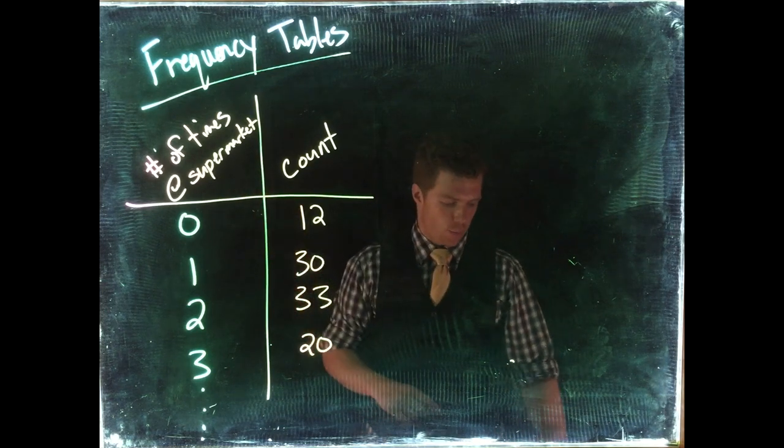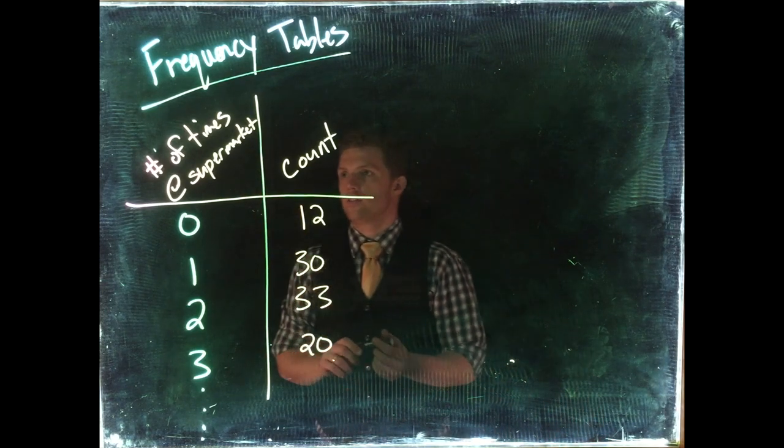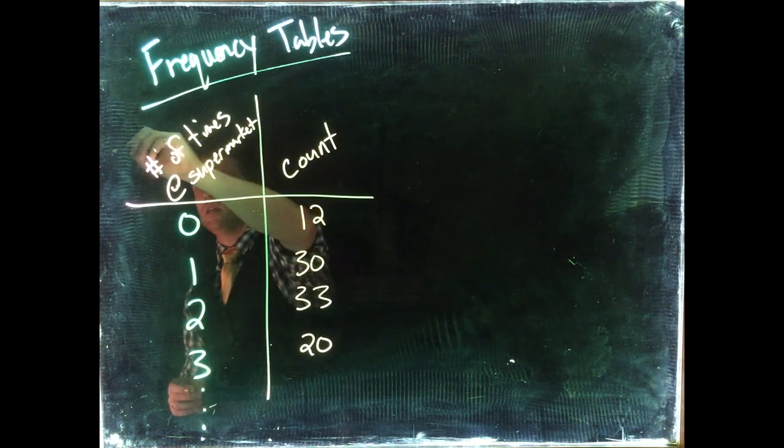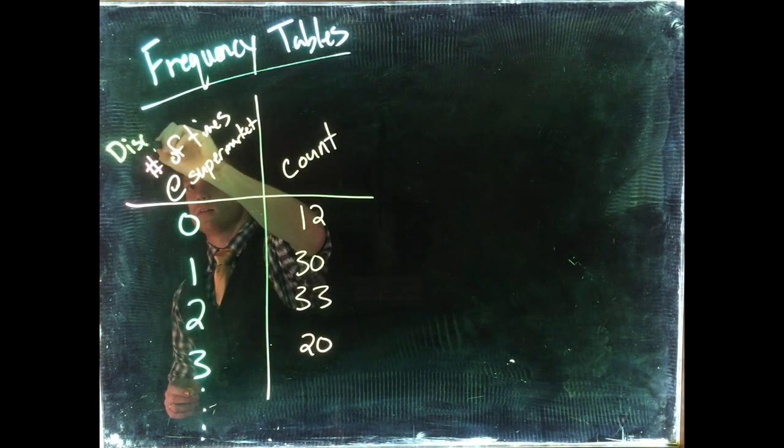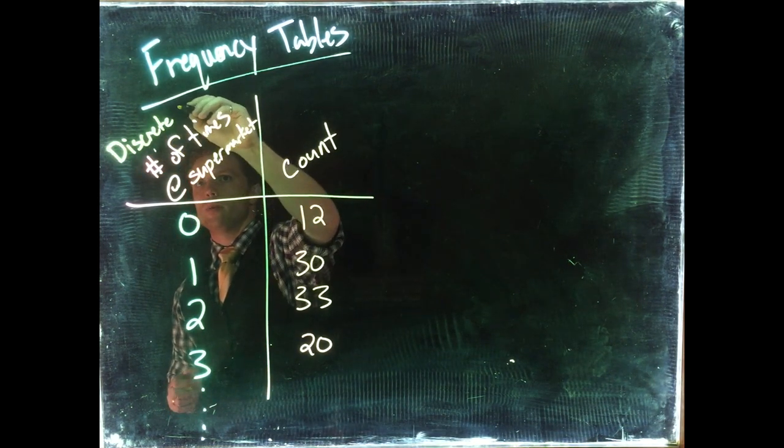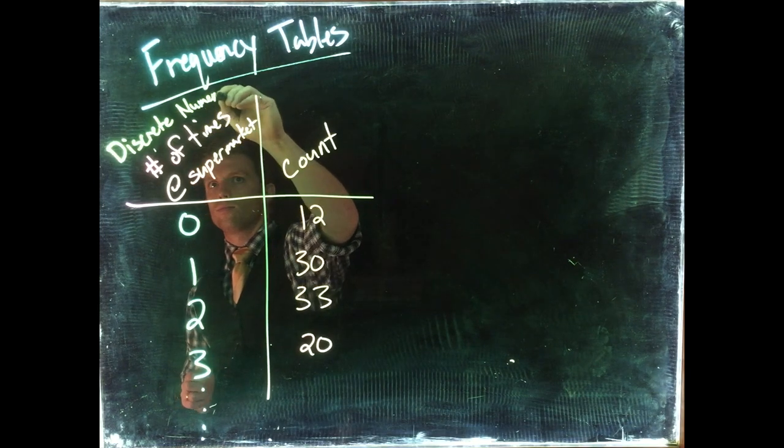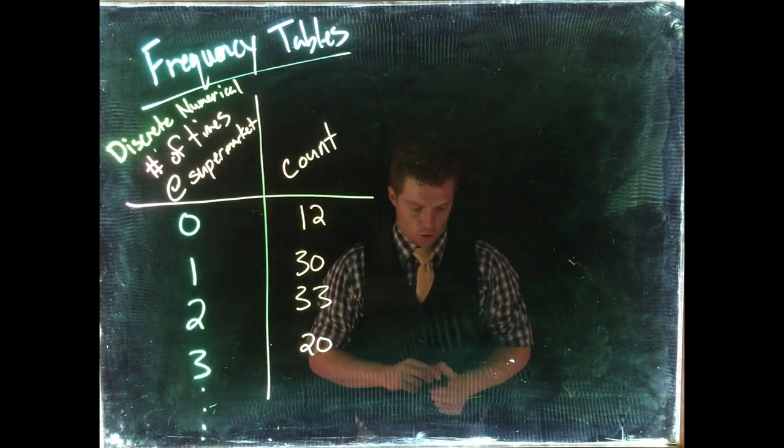Now the type of data that we're using here, if you've noticed, number of times at the supermarket, this is going to be discrete, discrete numerical. So that's one type that we can use.